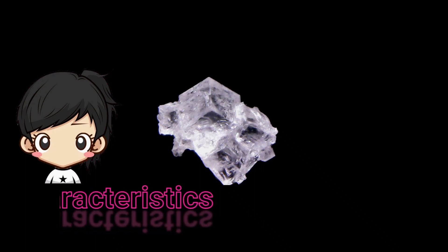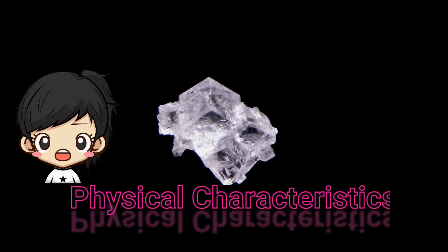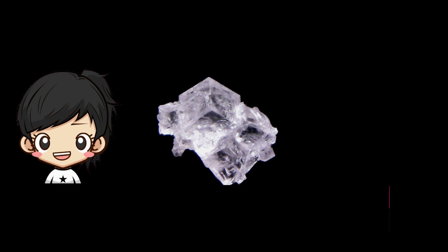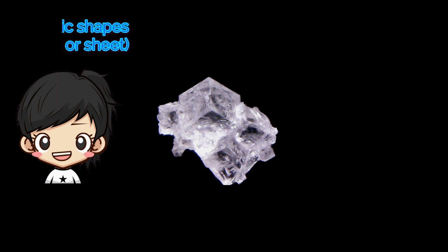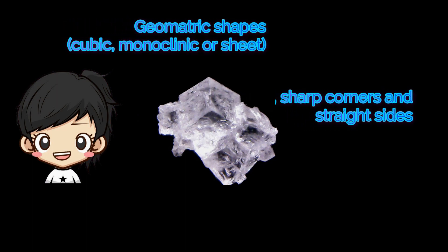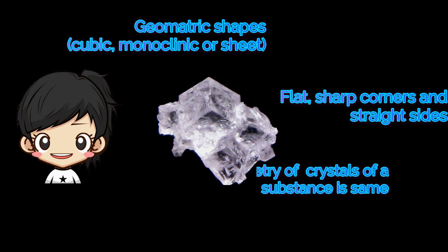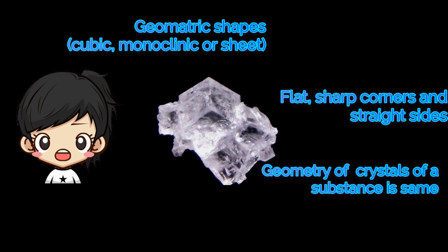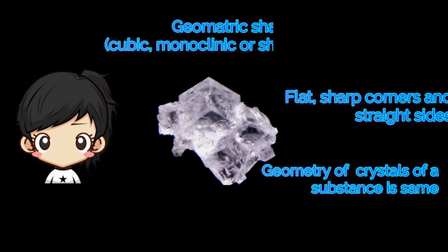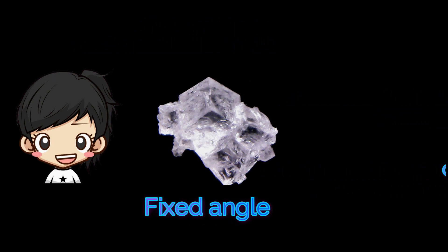Next, let's proceed to the physical characteristics of crystals. All salt crystals have the following common physical characteristics: they have geometric shapes with flat, sharp corners, and straight sides. The geometric shape of crystals of a substance is the same although the size of the crystals may be different. Crystals also have a fixed angle between two adjacent surfaces.